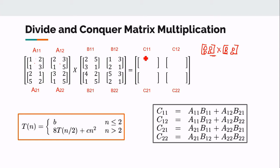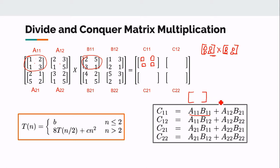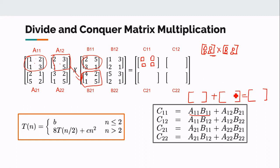C11 is a 2x2 matrix with 2 rows and 2 columns. It is computed by first multiplying A11 with B11, which gives a 2x2 result, then multiplying A12 with B21, which also gives a 2x2 result. We then add these two 2x2 matrices together.